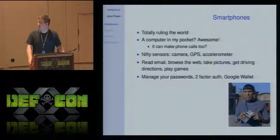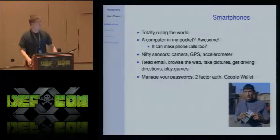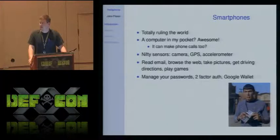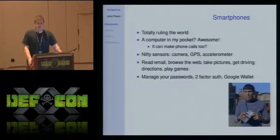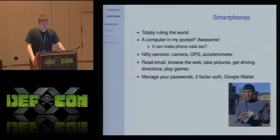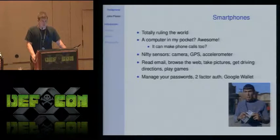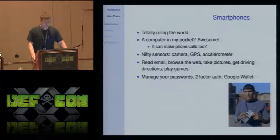Smart phones — probably everybody here has one or damn near. My first thought when I got one was, oh great, I've got a PC in my pocket now, and I guess it can also make phone calls. They're sort of better than the old PDA model, which was you had a computer in your pocket but couldn't talk to the internet. It's got a bunch of nice sensors like the camera, the GPS, the accelerometer. A lot of people just use it for everything now — you can use it to manage your passwords, do two-factor authentication, pay for stuff. They're really becoming a very ubiquitous computing platform.